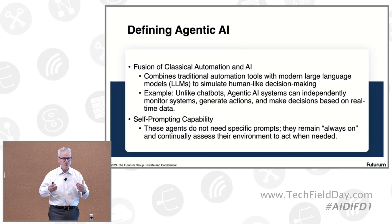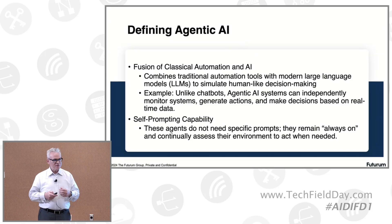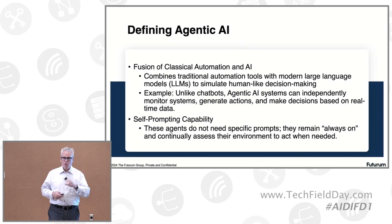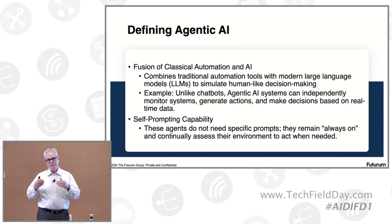A more complex agent would actually be watching that data, making decisions based on that input data, and then having more complex tasks come out of that. Another important aspect is that agentic AI agents don't require you to specifically engineer their prompts — they can prompt themselves, which is a little bit scary for those who've seen the Terminator movies. But it's actually not that scary. The idea is that they can be more resilient and provide much better connections between processes.